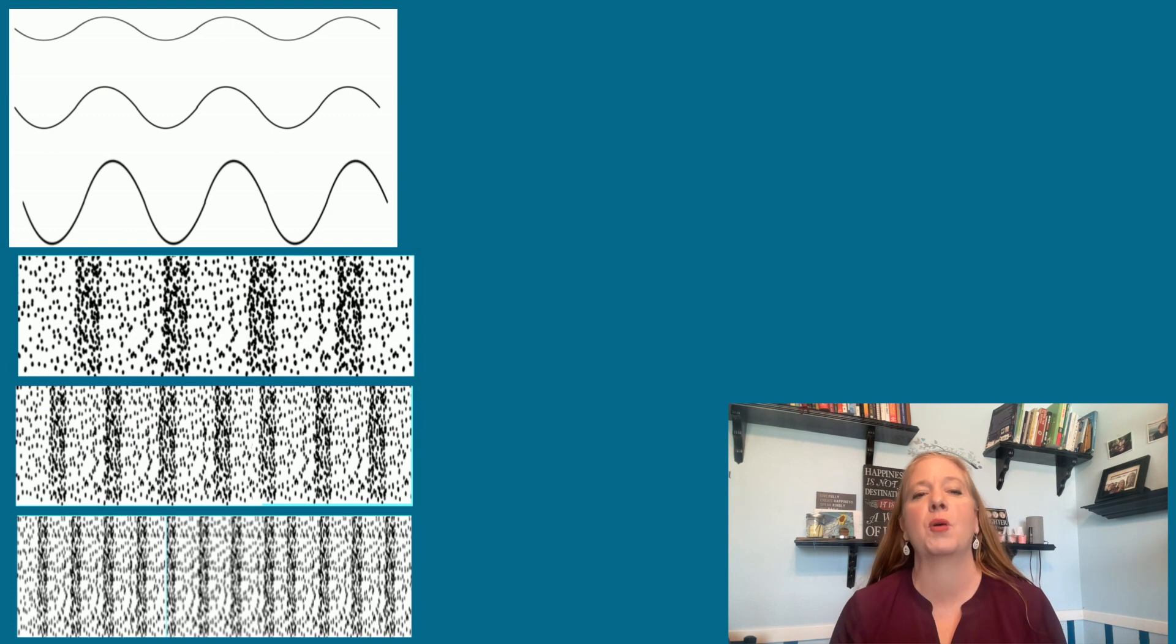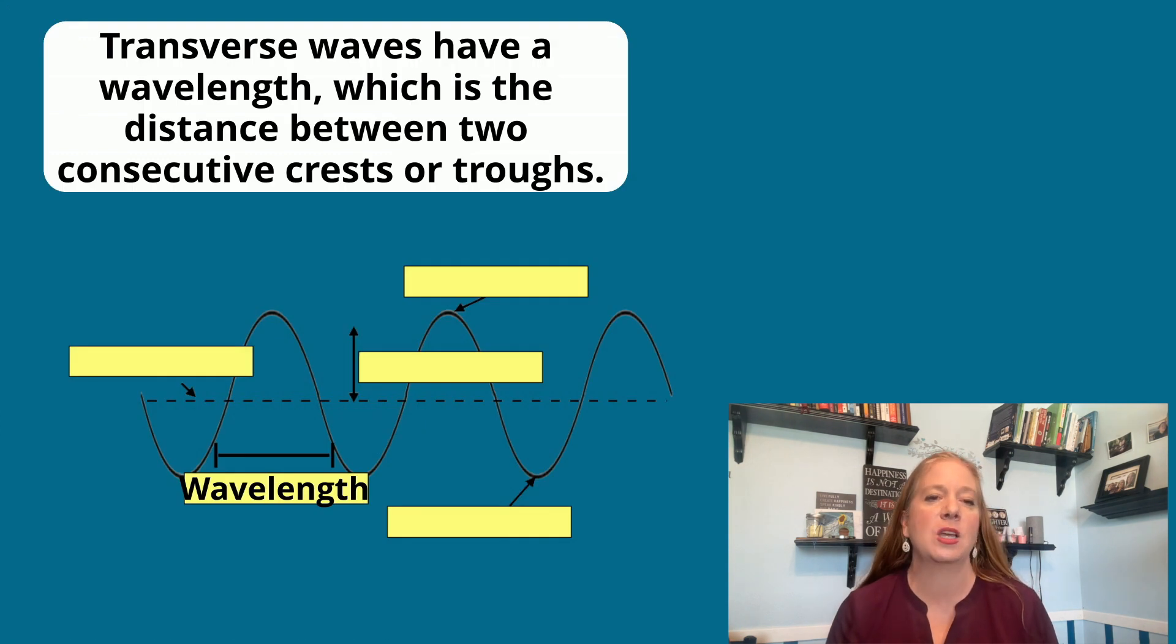Knowing the different parts of a wave help us to understand a wave's properties. Transverse waves have a wavelength, which is the distance between two consecutive crests or troughs.